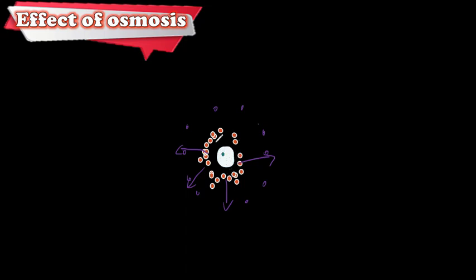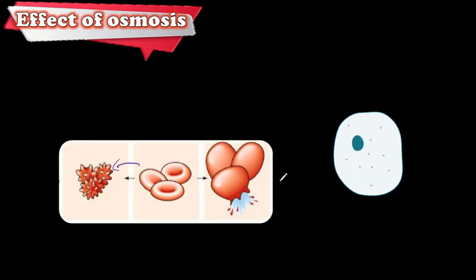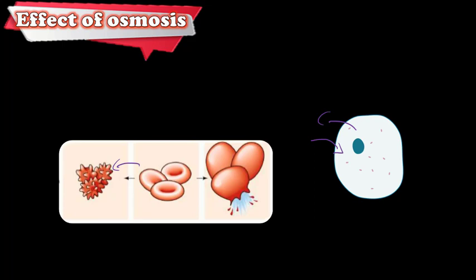The cell will shrink and become very small because it lost too much water. Take a red blood cell as an example: if it loses too much water, it will shrink; if it takes in too much water, it will swell up and then burst, and the cell will die.